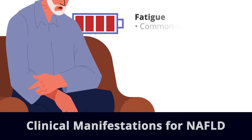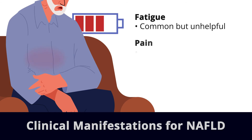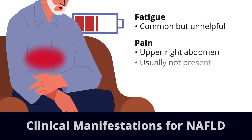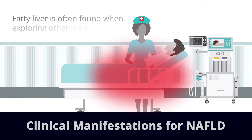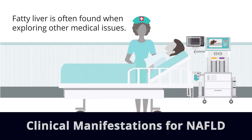Fatigue is an early and unhelpful symptom. Pain in the upper right abdomen might be present, but usually it is not. Unsurprisingly, fatty liver is often found when the medical team is exploring other medical issues.